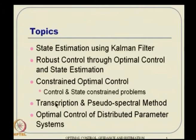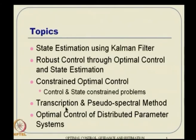Towards the end of the course, we will go to the transcription method — a very direct approach of solving optimal control problems. This converts the dynamic optimization problem to a static optimization problem with a large number of variables — that is why it is called transcription. Some overview of that will be followed by pseudo-spectral transcription, which is getting a lot of attention and is fast enough to potentially be used online.